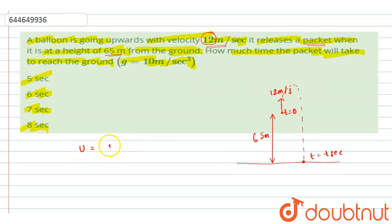Then we have the initial velocity would be 12 meter per second. Let me take the positive y axis like this, so we will have the initial velocity would be plus 12 meter per second.